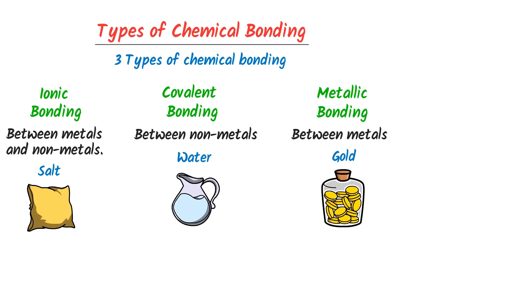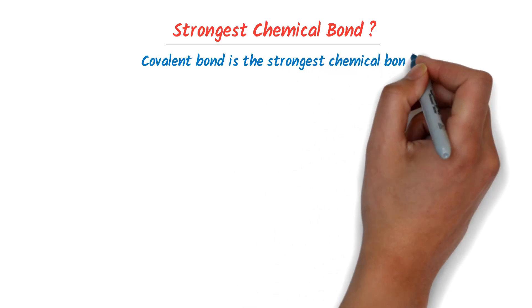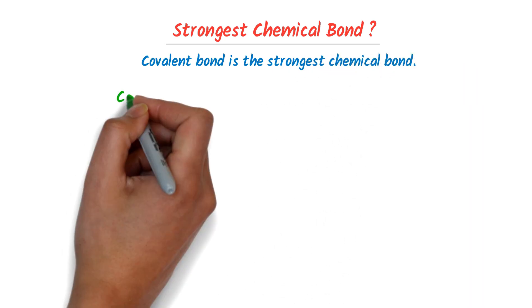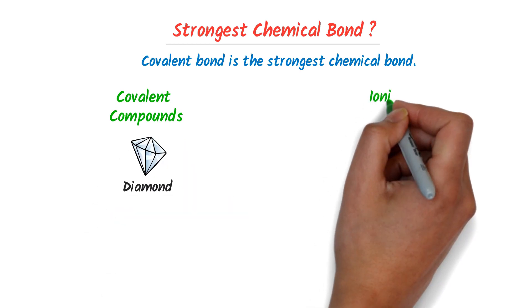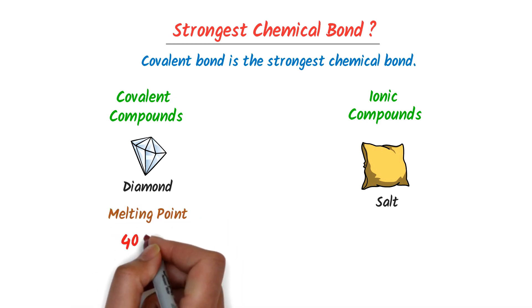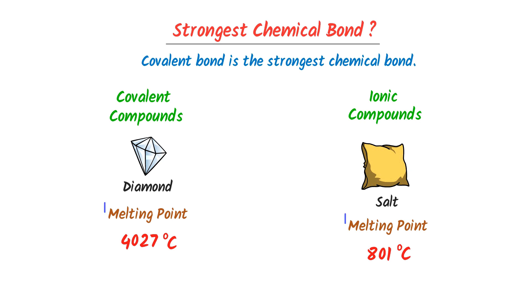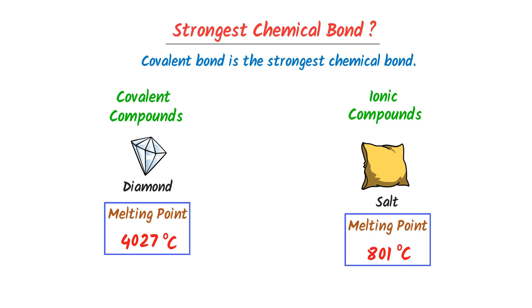Finally, let me teach you one bonus question: which is the strongest chemical bond? In general, the covalent bond is considered to be the strongest chemical bond. For example, consider diamond (a covalent compound) and sodium chloride (an ionic compound). The melting point of diamond is 4,027 degrees centigrade, while the melting point of table salt is 801 degrees centigrade. Since the melting point of diamond is much higher, in terms of melting and boiling points, the covalent bond is considered the strongest chemical bond.